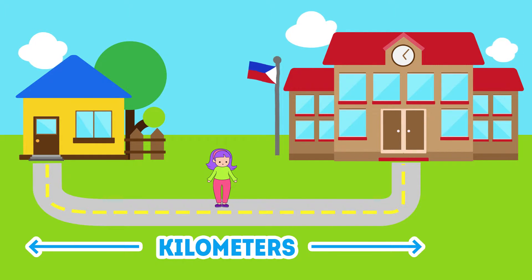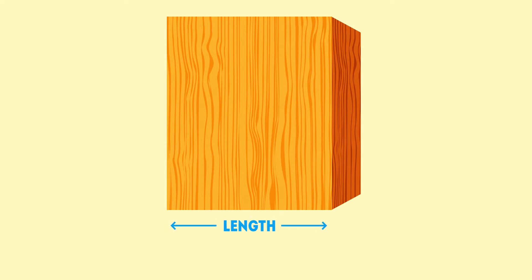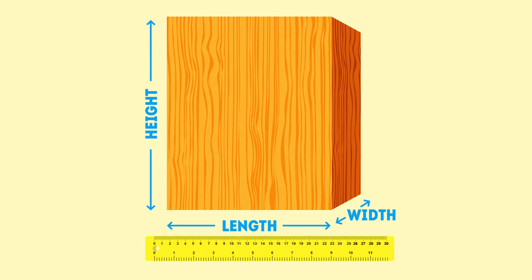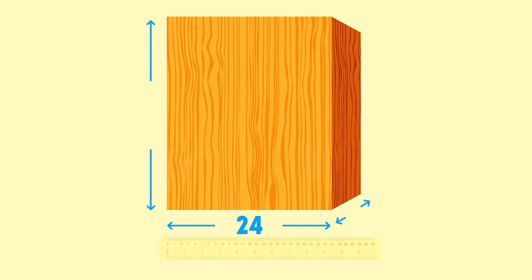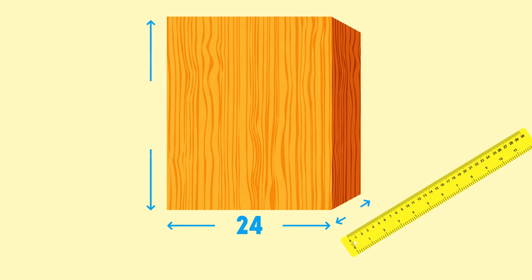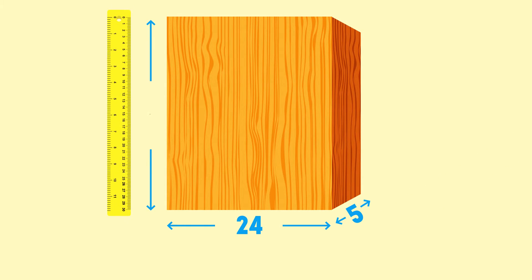Let's use an example. Let's measure this block of wood's length, width, and height. Using my ruler, we found that it's 24 centimeters long, 5 centimeters thick, and 30 centimeters tall.